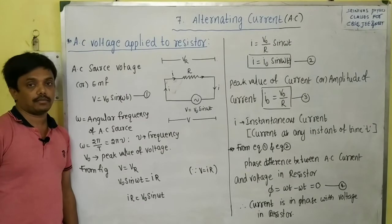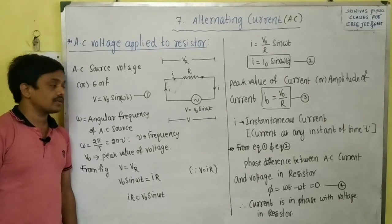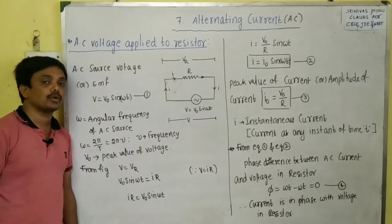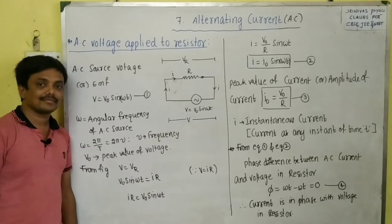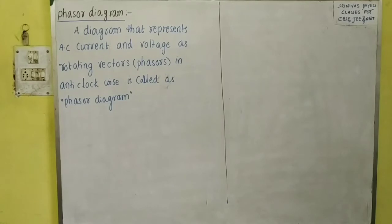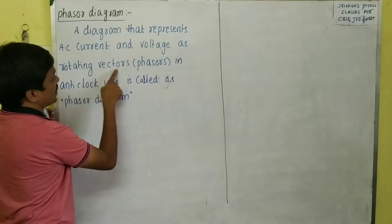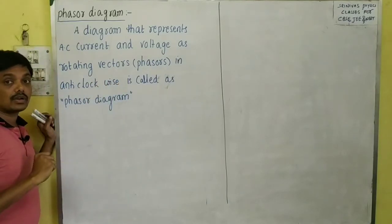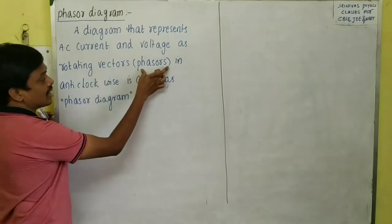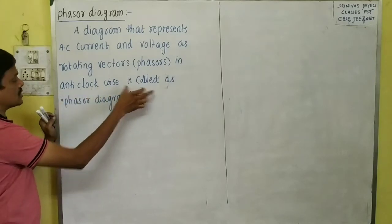Now I am going to explain the phasor diagram, which is very important. A phasor diagram is a diagram that represents AC current and voltage as rotating vectors. In this chapter, current and voltage are taken as rotating vectors — also called phasors. They are represented rotating in the anti-clockwise direction.